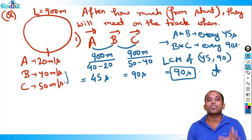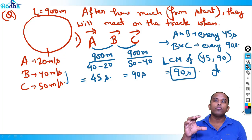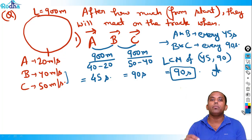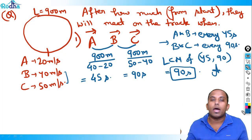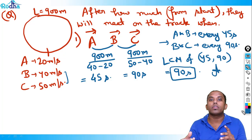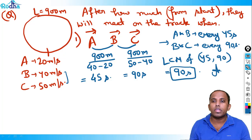LCM of 45 and 90 is 90. So all three — A, B, C — will meet after every 90 seconds on the circular track. The key concept: find when each consecutive pair meets, then take LCM. A and B meet every 45 seconds, B and C every 90 seconds; LCM gives 90 seconds.